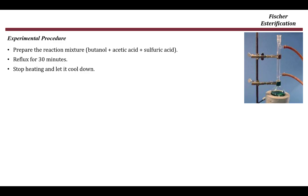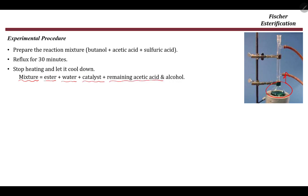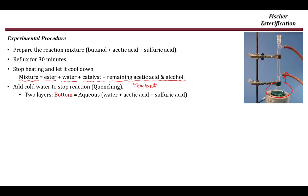After refluxing, we stop heating, move the reaction flask, and let it cool down. Once cooled, the mixture contains the ester product, water byproduct, the catalyst, and remaining acetic acid and unreacted alcohol. We then add cold water to stop the reaction — this is called quenching. Cold water produces two layers: the bottom aqueous layer containing water, acetic acid, and sulfuric acid, and the top organic layer containing our ester and unreacted butanol.